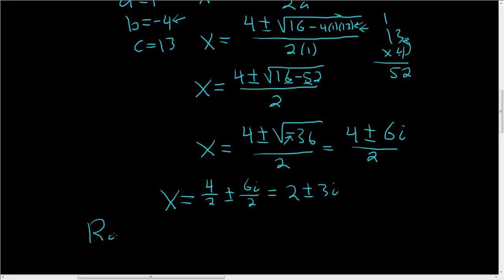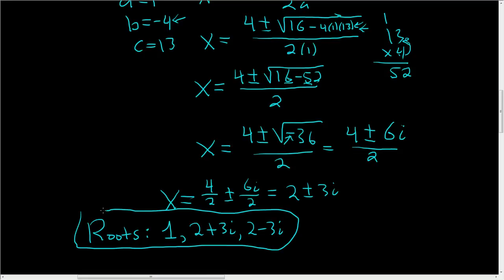So the final answer is roots. Well, the first one we found was 1 via synthetic division. And the other two are 2 plus 3i and 2 minus 3i. And that's it. That's how you use the rational roots theorem to solve an equation.